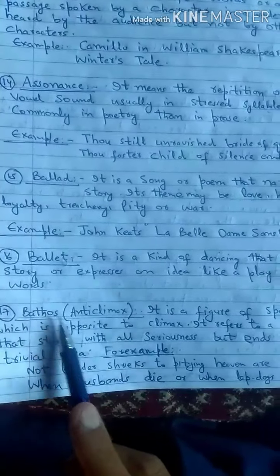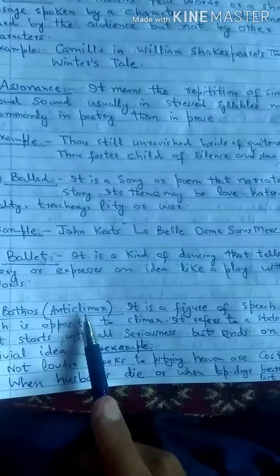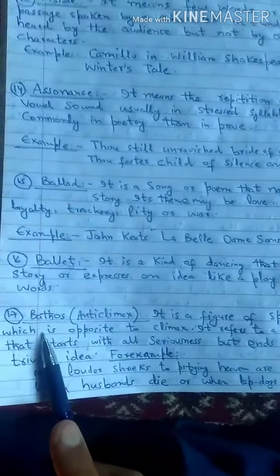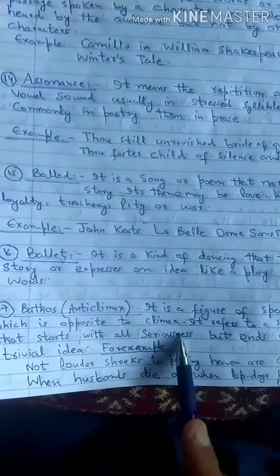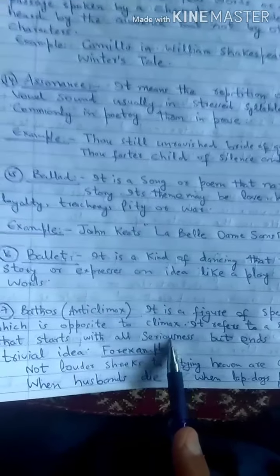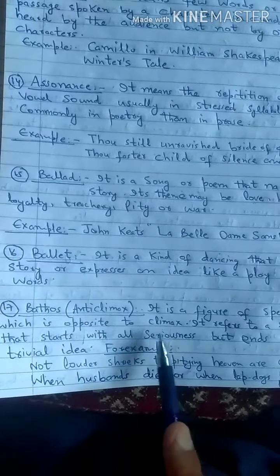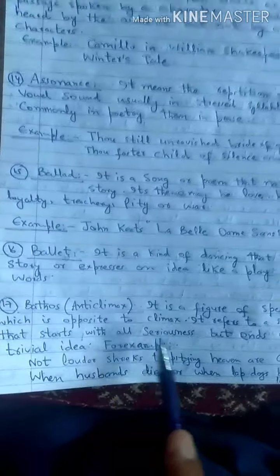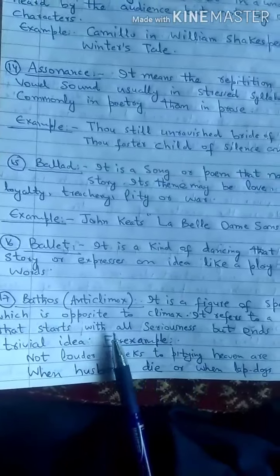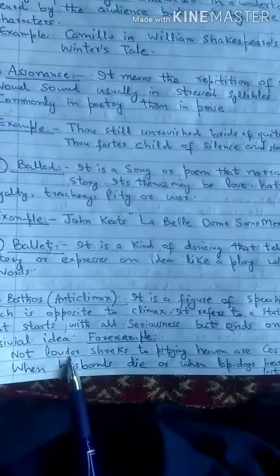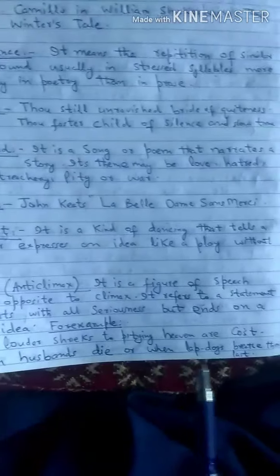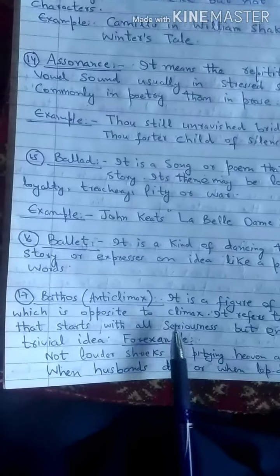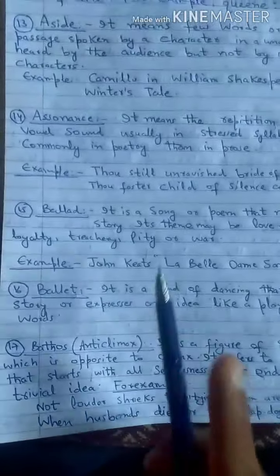The seventeenth term is bathos, also known as anti-climax. It is opposite to climax and is a figure of speech. It refers to a statement that starts with great seriousness but ends with a trivial idea. For example: 'Not louder shrieks to pitying heaven are cast, when husbands die or when lapdogs breathe their last.' This is an example of bathos — it starts seriously but ends trivially.